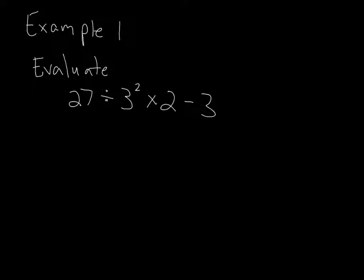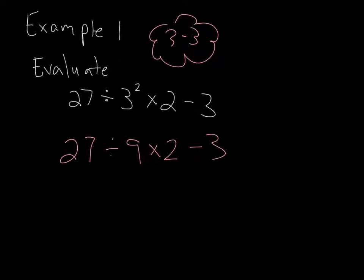Okay, so first, grouping symbols. Are there any kinds of parentheses sitting in this problem? No, there's not. Now we move on to exponents, and we do see that we have a power here. We have an exponent. We have three squared. So what is three squared? Three squared means—remember, what does that mean? Three squared. That means take the number three and multiply it by itself twice. So three times three, which is nine. So this problem becomes 27 divided by nine times two minus three. And as you're doing these, until you become really good, do one thing at a time.